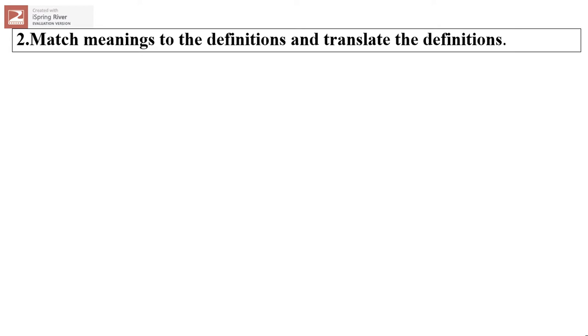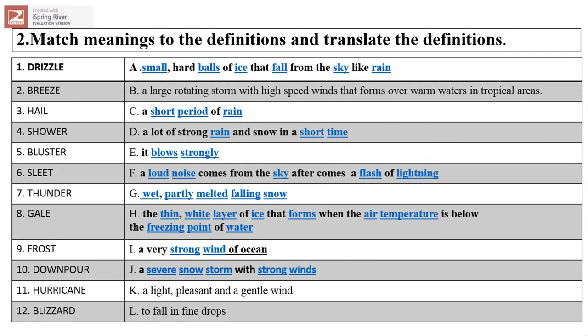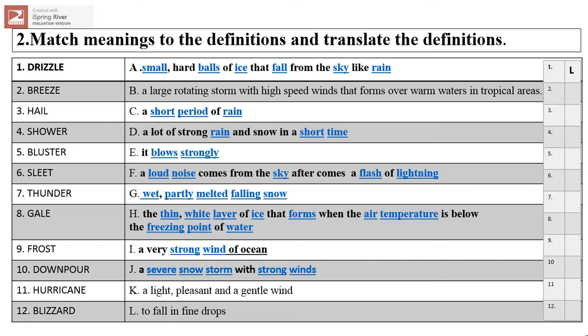Alright my students, match meanings to the definitions and translate the definitions again. Okay: drizzle, breeze, hail, shower, blaster, sleet, tundra, gale, frost, downfall, hurricane, blizzard. Okay, you have to match the definitions and translate into Mongolian.